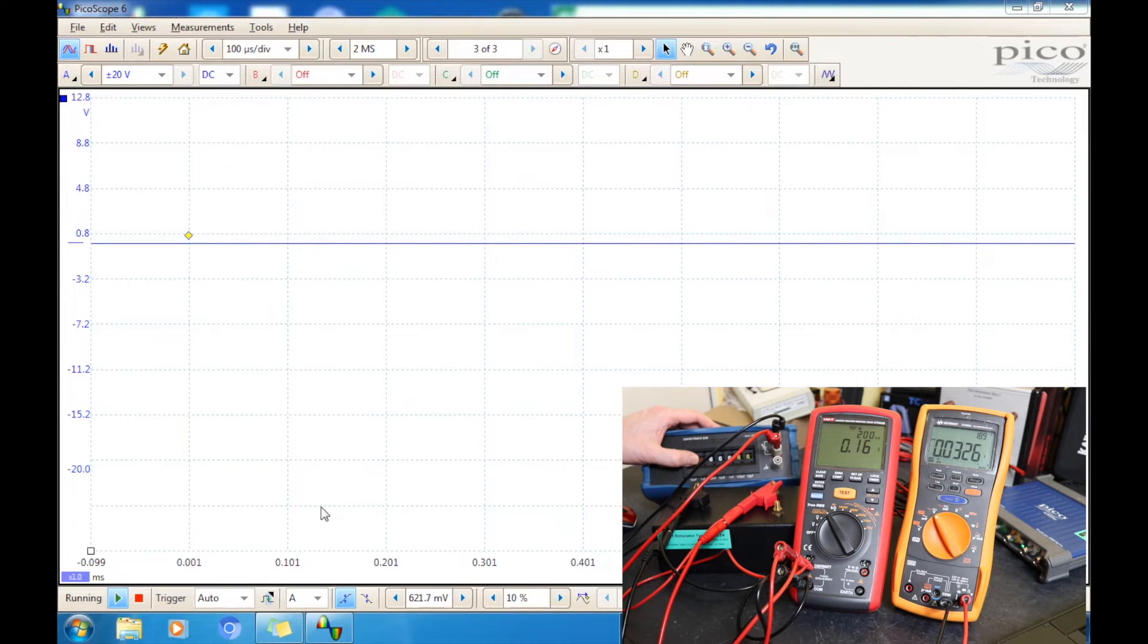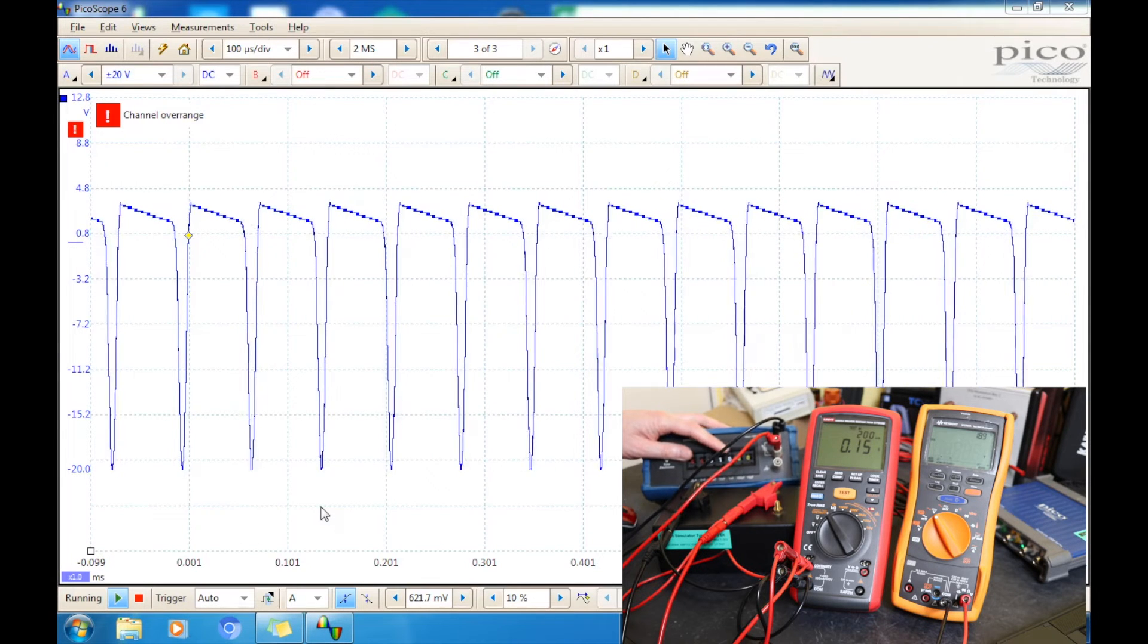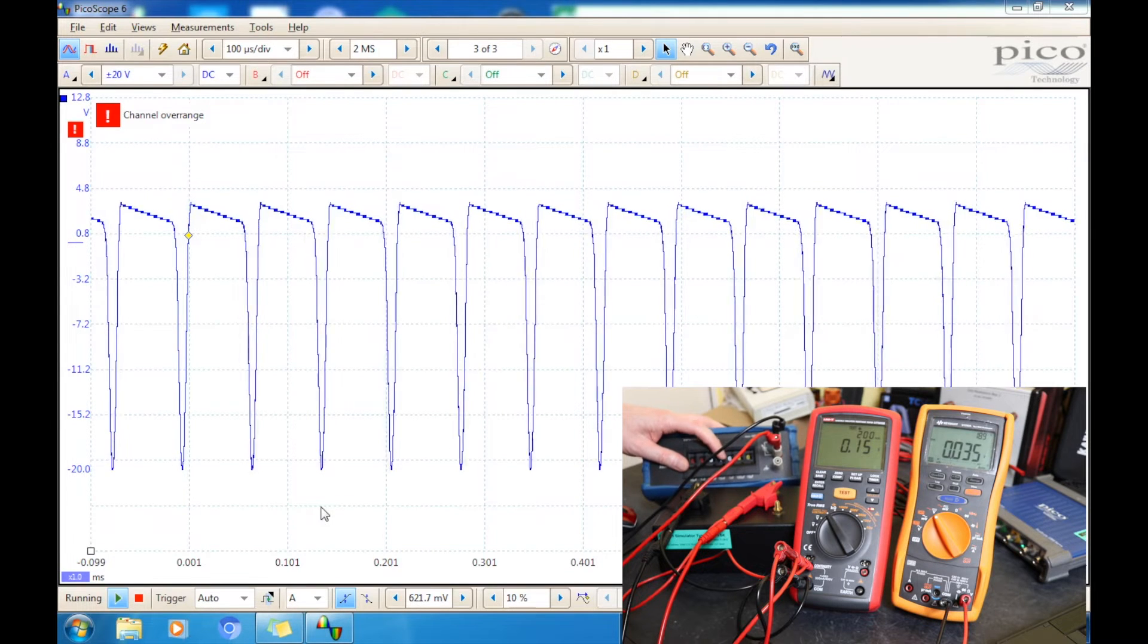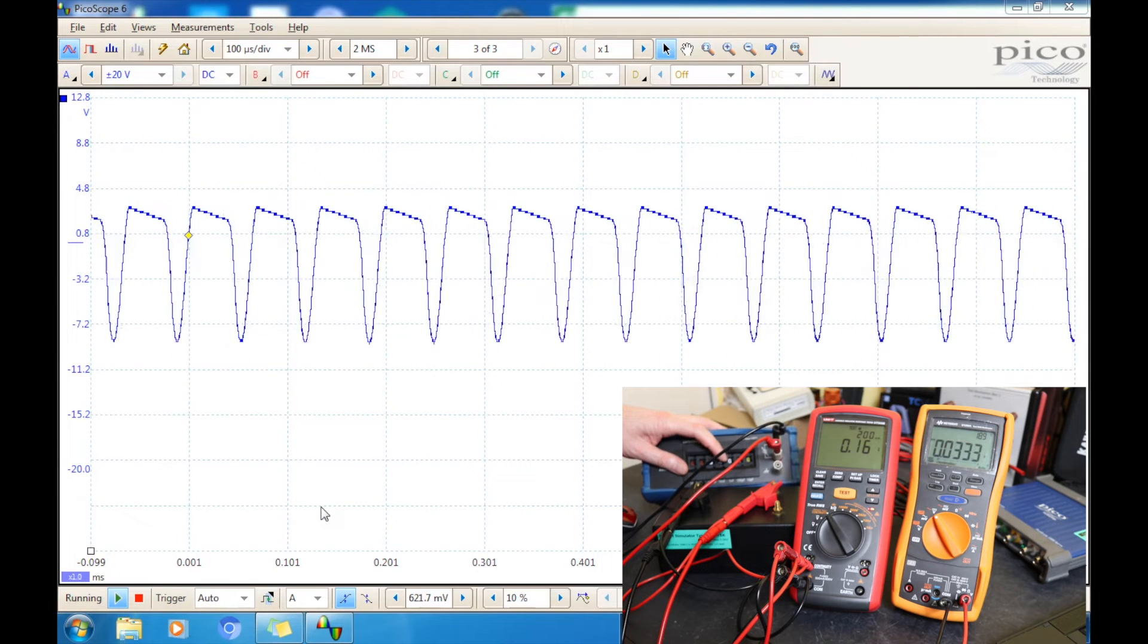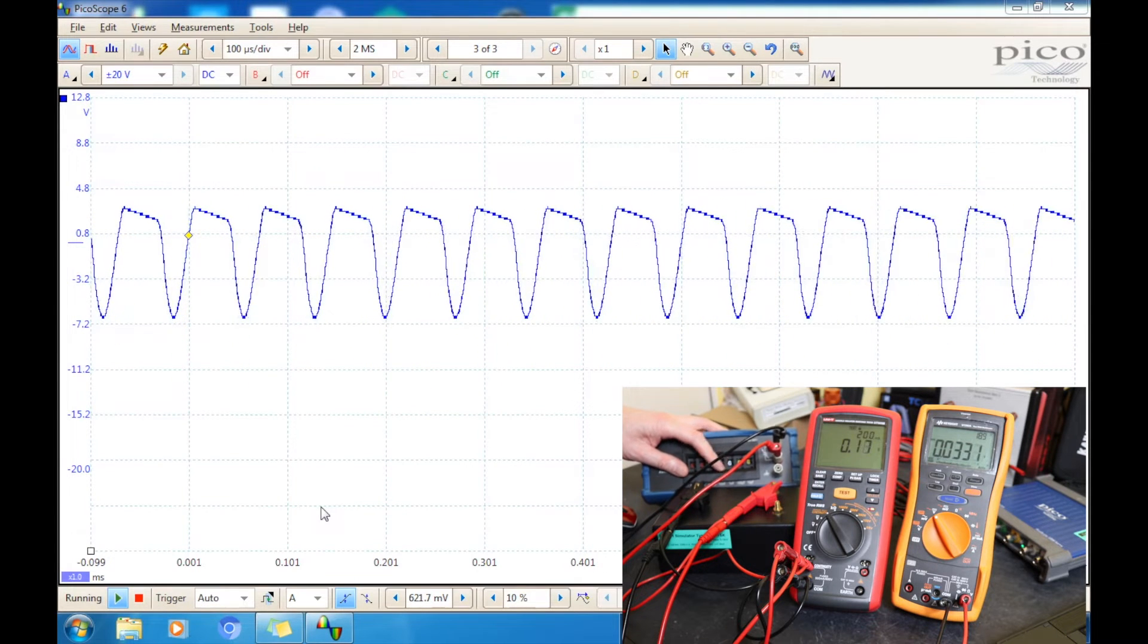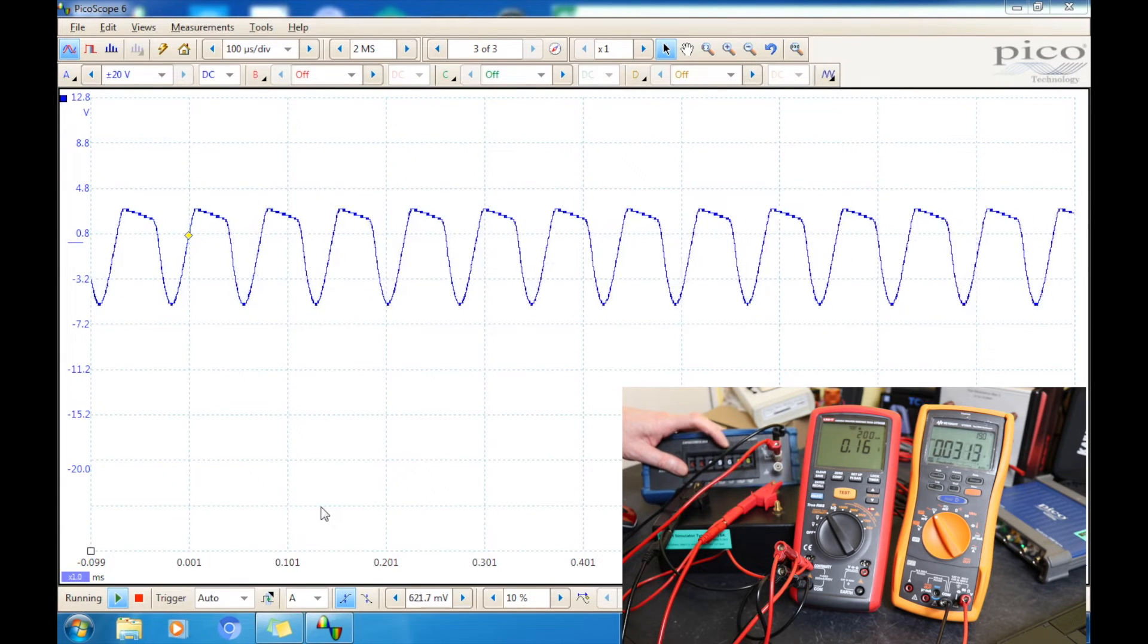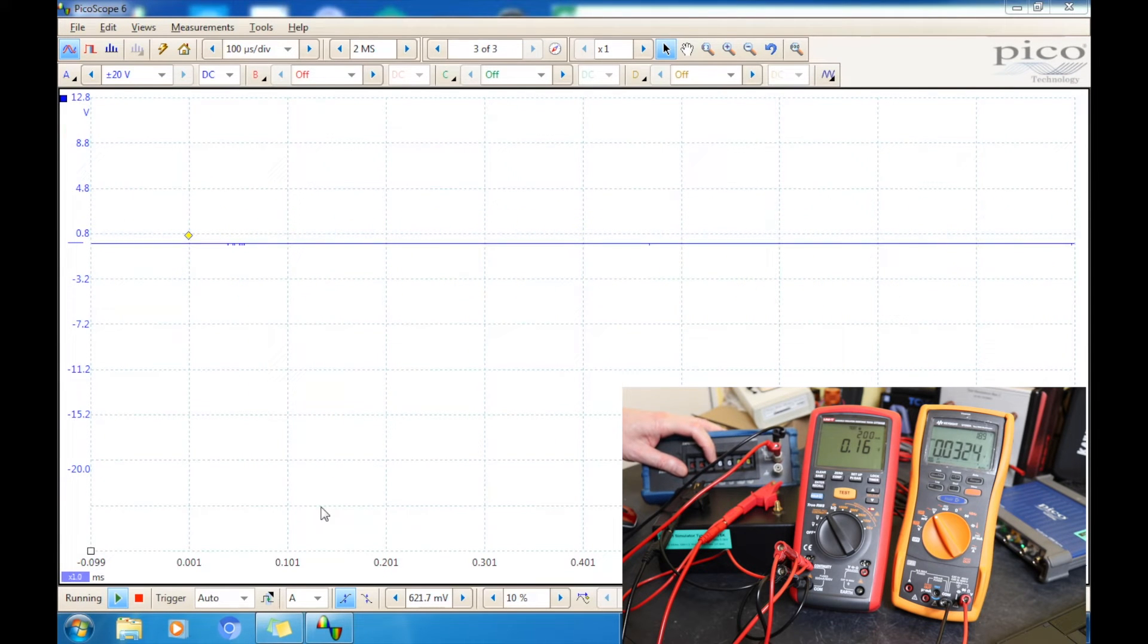Let's go to 10 nanofarads. You can still see we've got oscillation on the scope there. 10 nanofarads, let's go 20. You see with every increase in capacitance we're getting the smoother and smoother line. We're not affecting the reading. That's 0.9 there. I'll go back. It's 100 nanofarad there. 200 nanofarad is when it's switched over, so that's when the oscillation stopped.